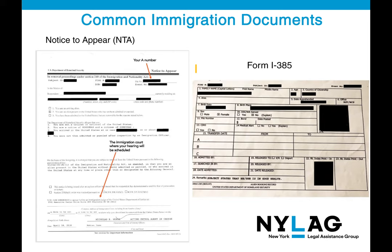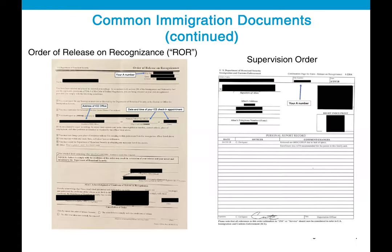Here are screenshots of common immigration documents you may encounter. The first is called the Notice to Appear, or NTA, which is the charging document immigration issues to notify you that removal or deportation proceedings are starting against you in court. The form I-385, or Notice to Report, tells you to report to an ICE office within 60 days. There is also the Order of Release on Recognizance, or ROR, issued to some immigrants who were detained and then released, telling you when and where to go for your ICE check-in appointment. Finally, the Supervision Order is a document ICE issues to keep track of your check-in appointments.